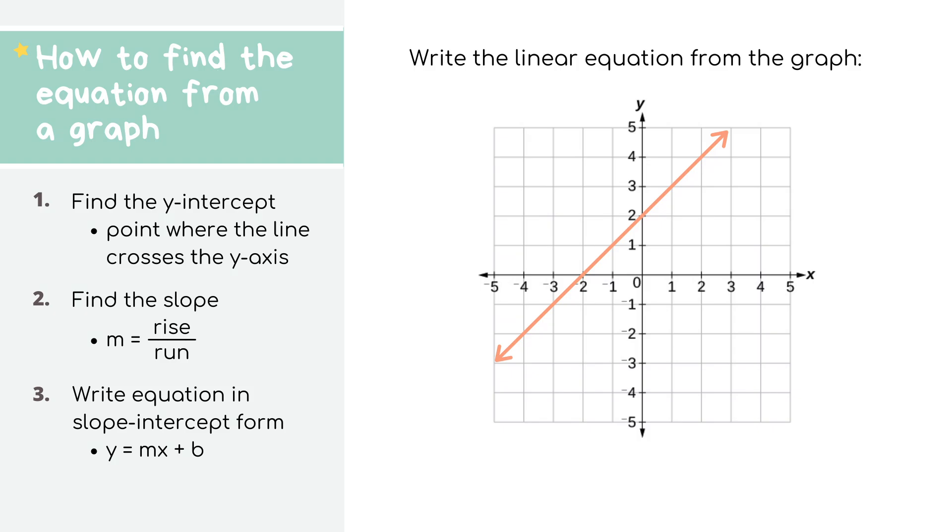When your teacher gives you the graph of a line and asks you to write the equation, you can use the different parts of the slope-intercept form equation to build it out. As a reminder, slope-intercept form is written as y equals mx plus b, where the letter m represents the slope, which is how steep your line is, and b represents the y-intercept, which is where the graph of the line crosses the y-axis. Basically, once we find the value of the slope and the y-intercept, we can plug them in and write out the equation.